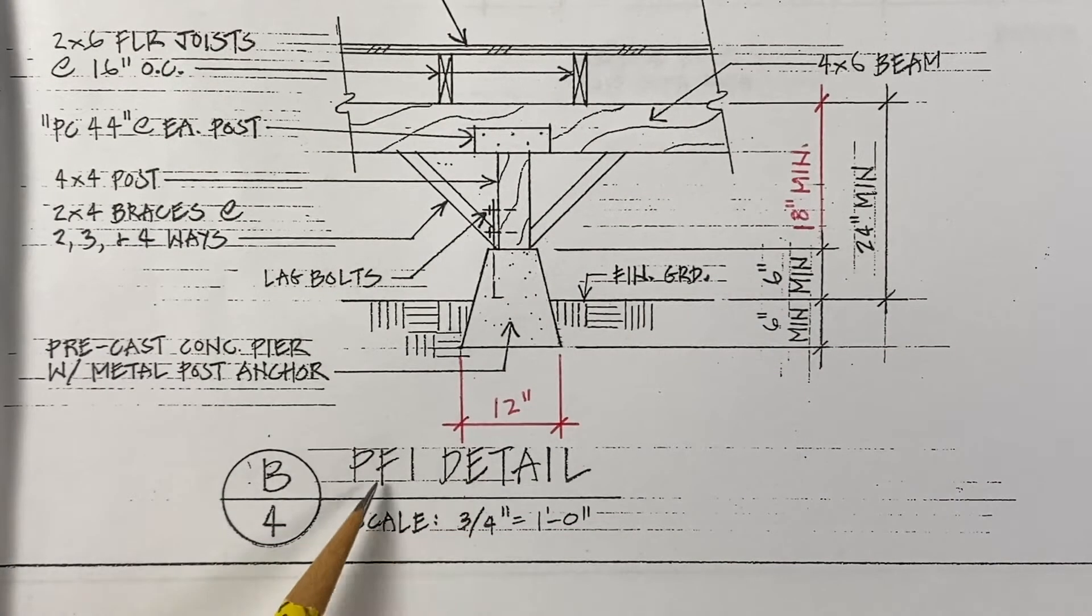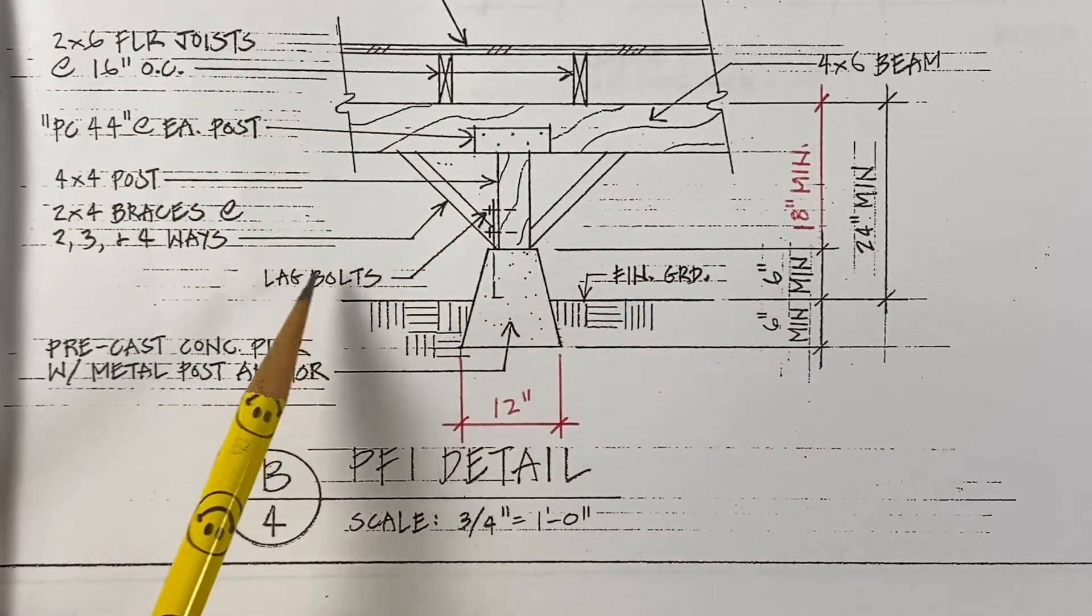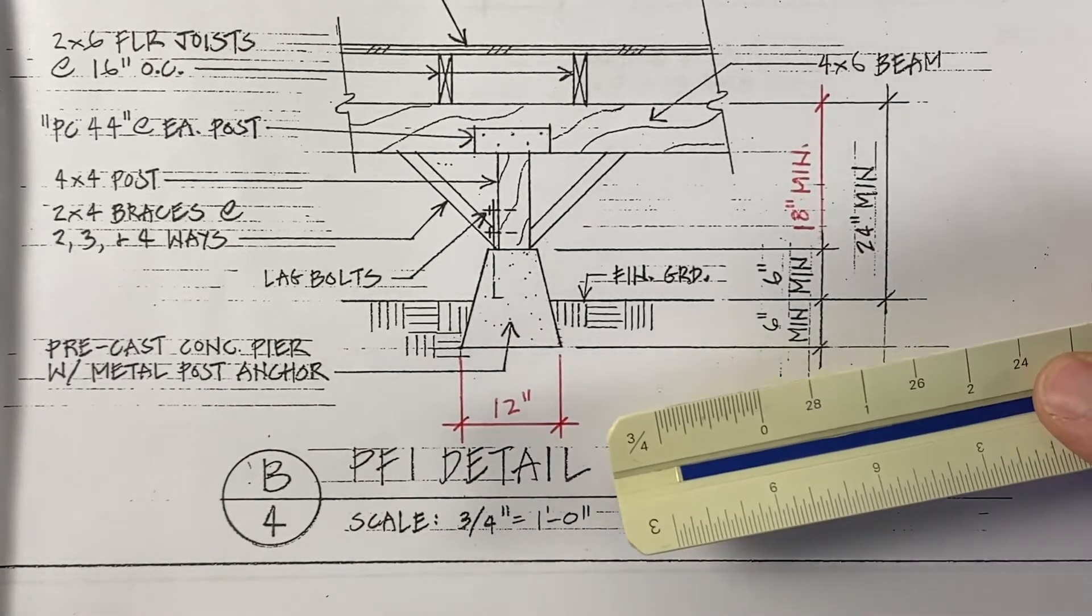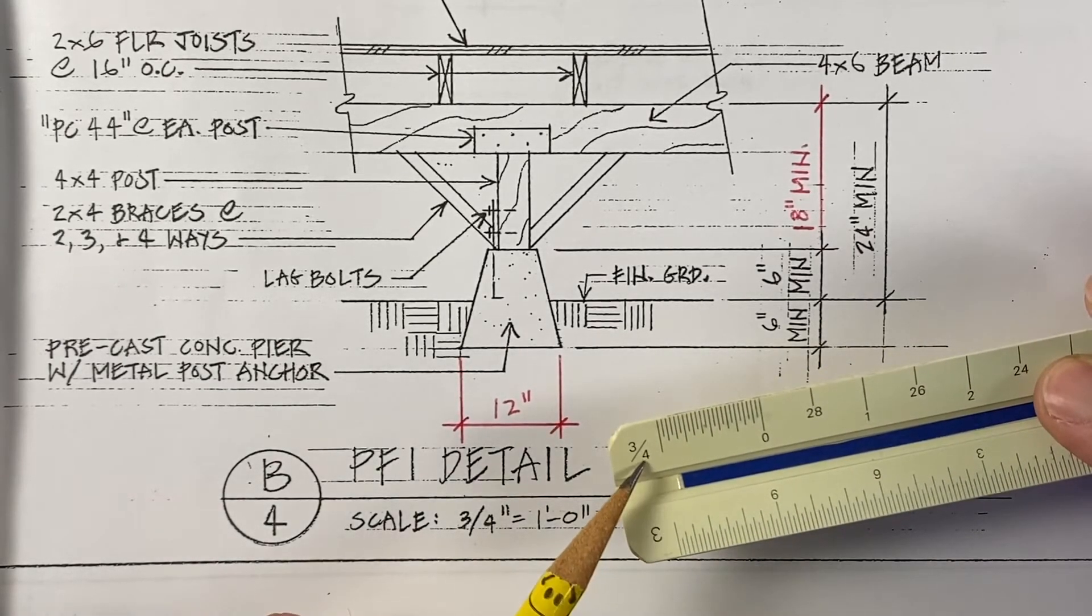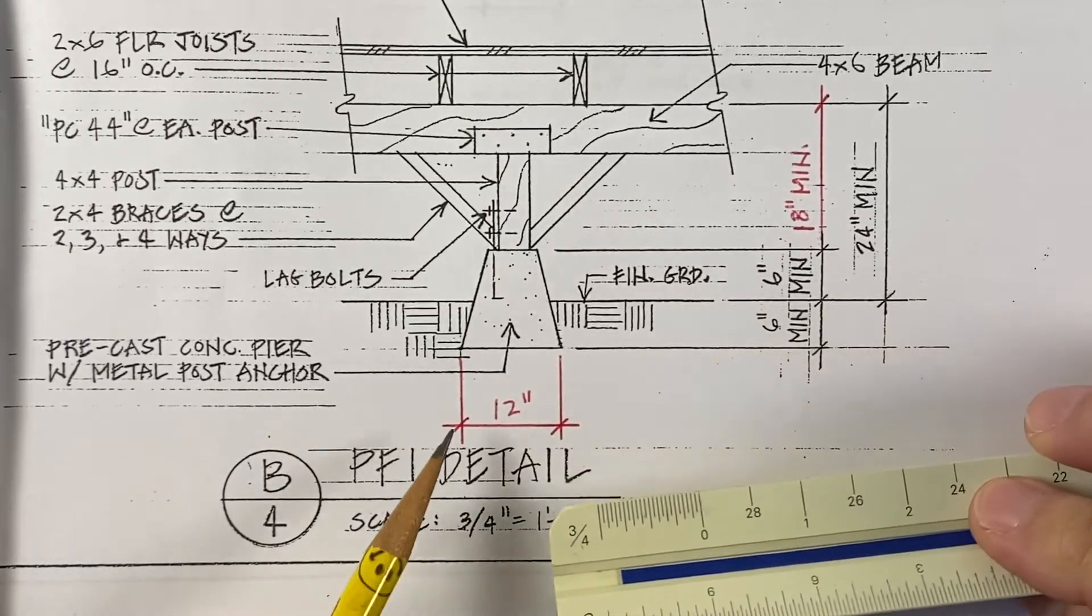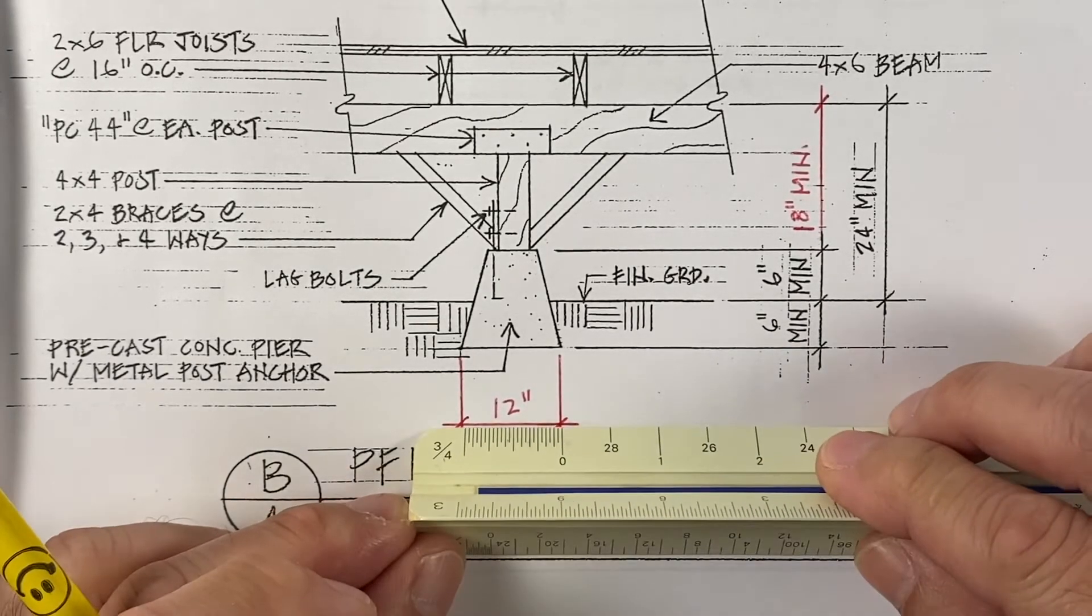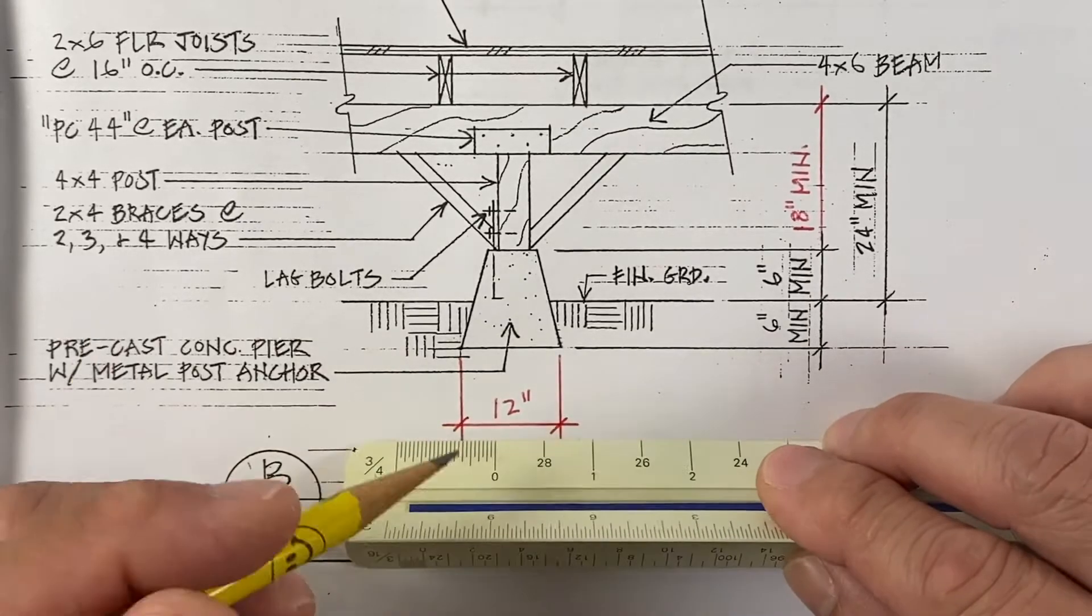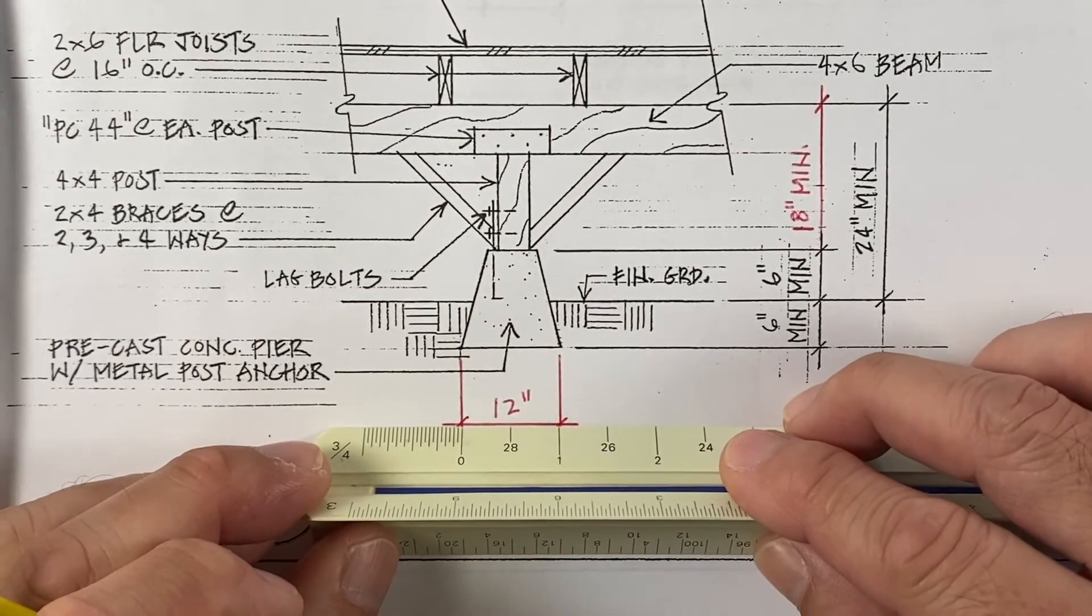Now let's look at a pier footing detail, a scale three quarters of an inch equals a foot. With this larger scale, you can show a lot more detail. We'll refer to our three quarter inch scale and measure this 12 inch dimension. And another way is to refer to the zero and one foot marks.